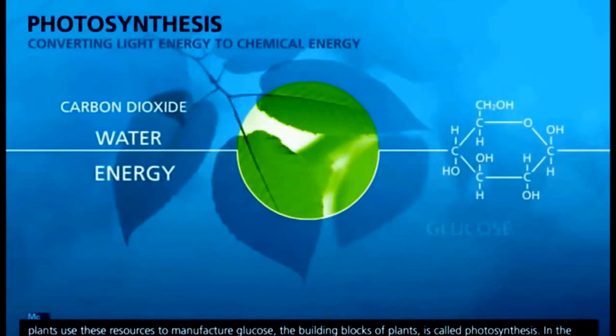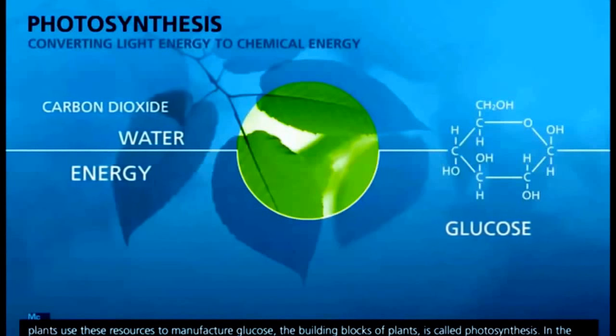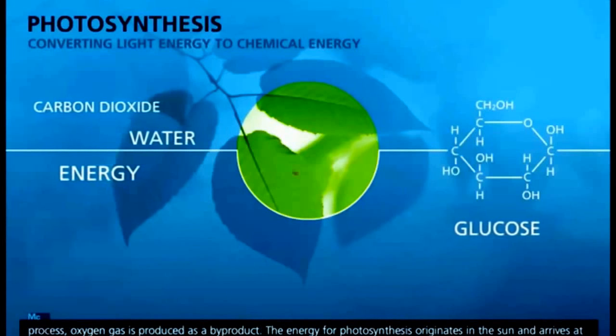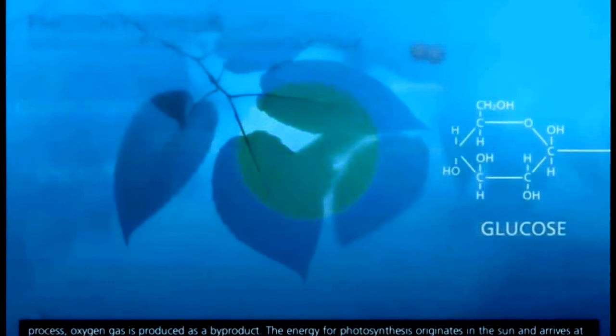For the photosynthesis, carbon dioxide, water and sunlight, chlorophyll are the requirements. Oxygen released as a byproduct. Glucose is the main product of the process.